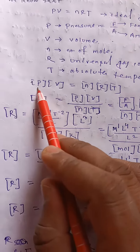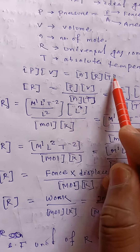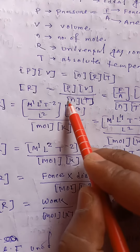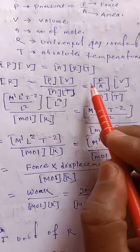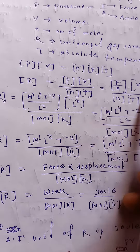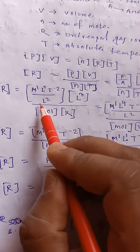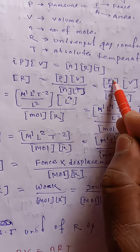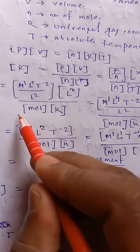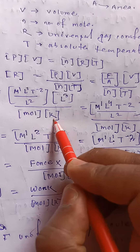The dimension of R equals the dimension of P times V, divided by the dimension of n times T. Pressure is force per area. The dimension of force is M¹L¹T⁻², and area is L². Volume is L³. So the numerator gives M¹L¹T⁻² times L³, divided by L², then divided by mole and kelvin.